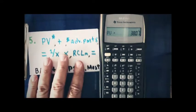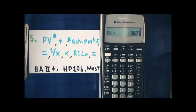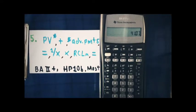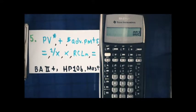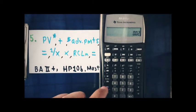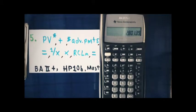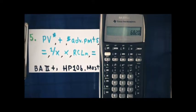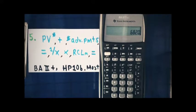On to step 5: we're going to add A to that, which is 3 advance payments. Hit the equals key — I get 41.07. Take the reciprocal, then multiply by recalling the memory register from step 3, which is $2,801.39. Hit equals, and that is going to be your lease payment per month: $68.28.